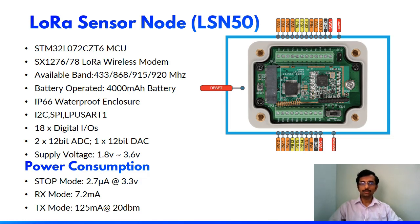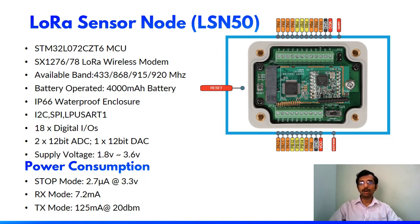There are also many digital and analog pins — 18 digital IOs, two 12-bit ADCs, and one 12-bit DAC. It operates at a voltage level of 1.8V to 3.6V DC supply with very low power consumption. During stop mode it consumes 2.7 microamps, during receiving mode 7.2 microamps, and during transmission mode 125 microamps.